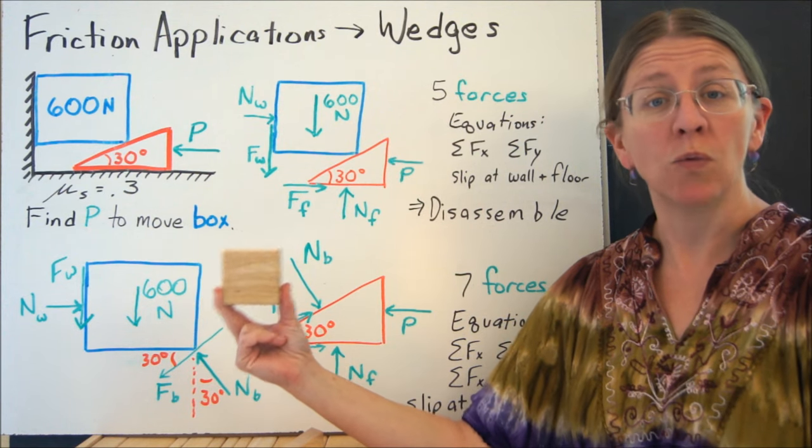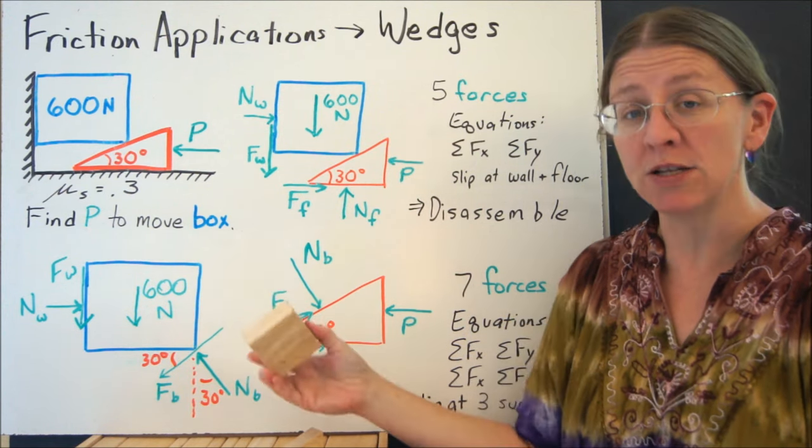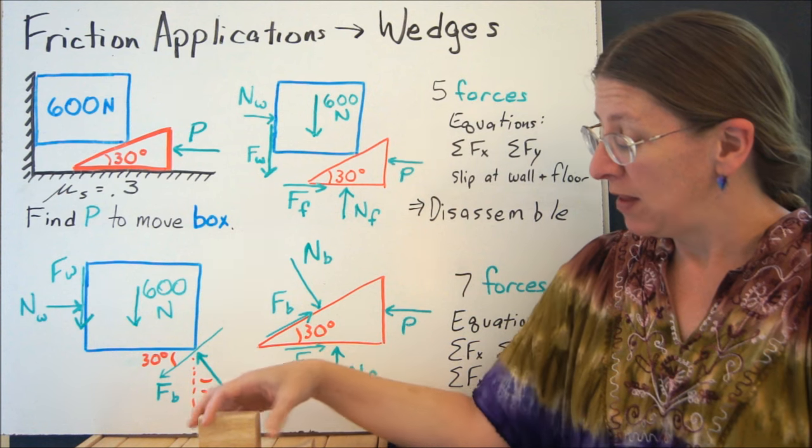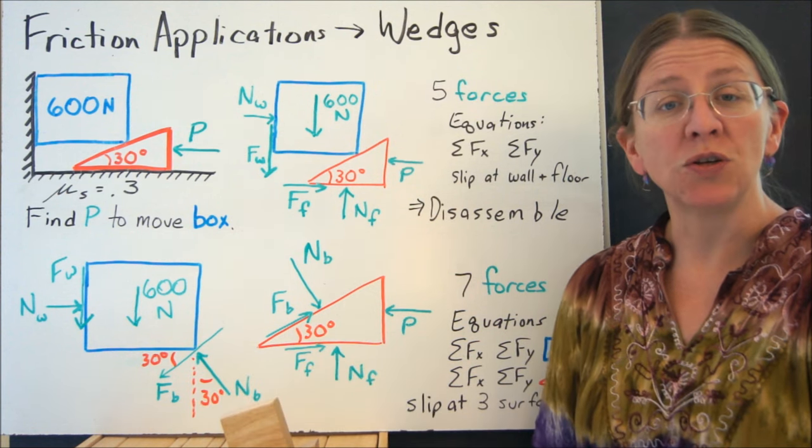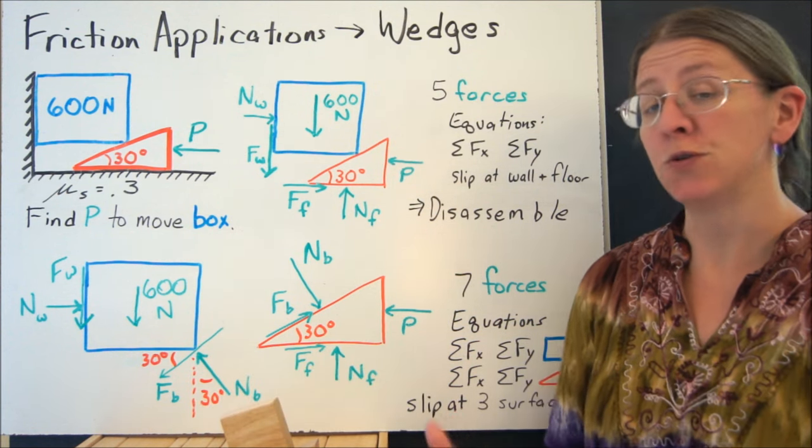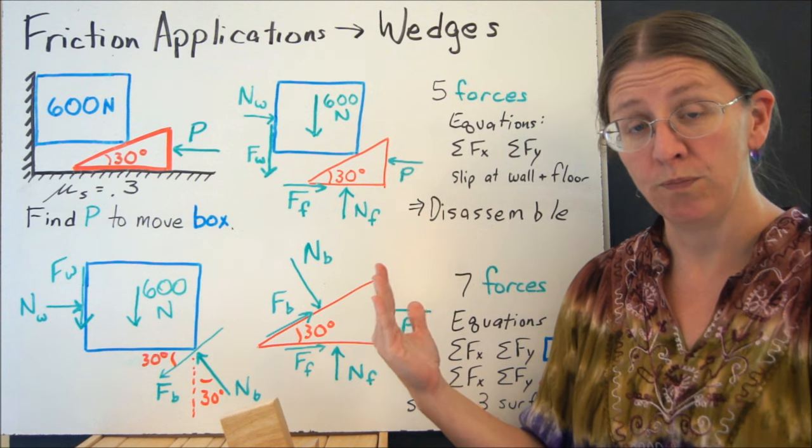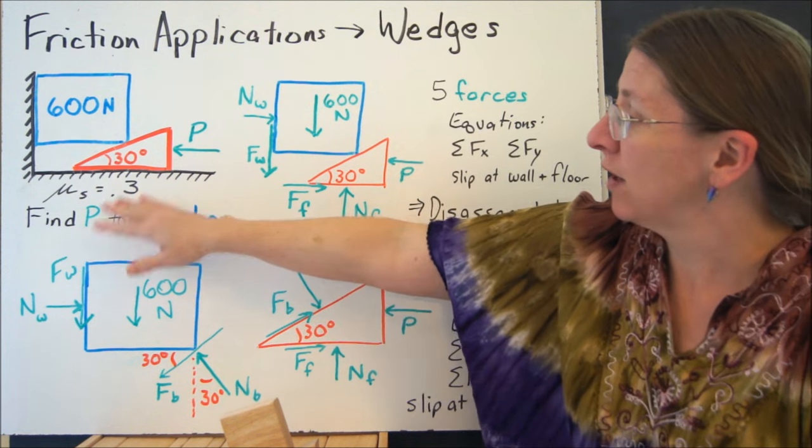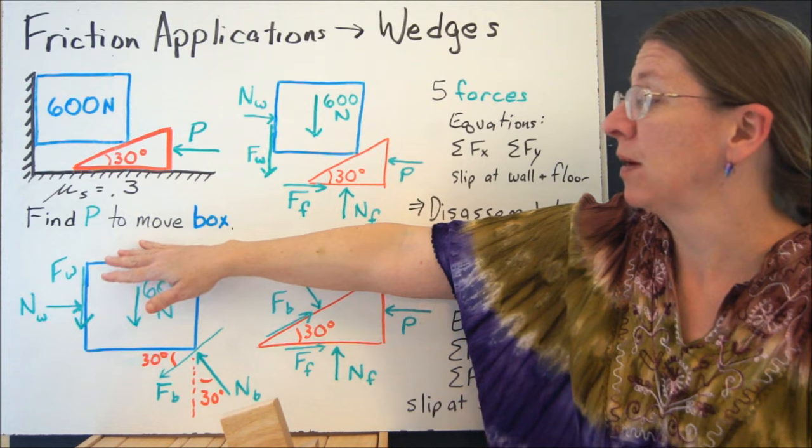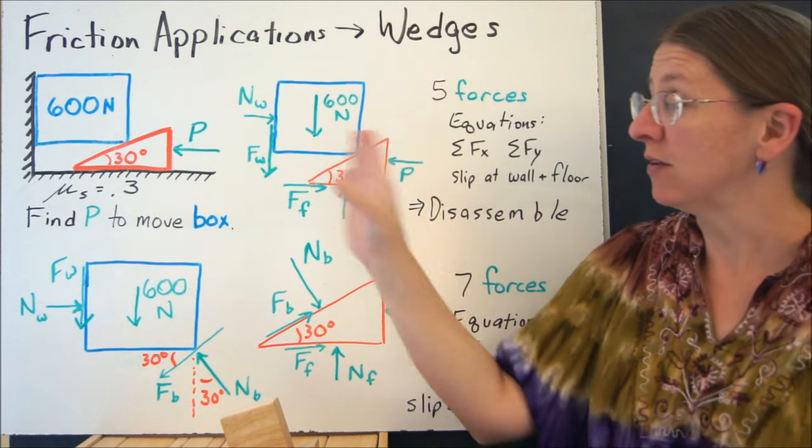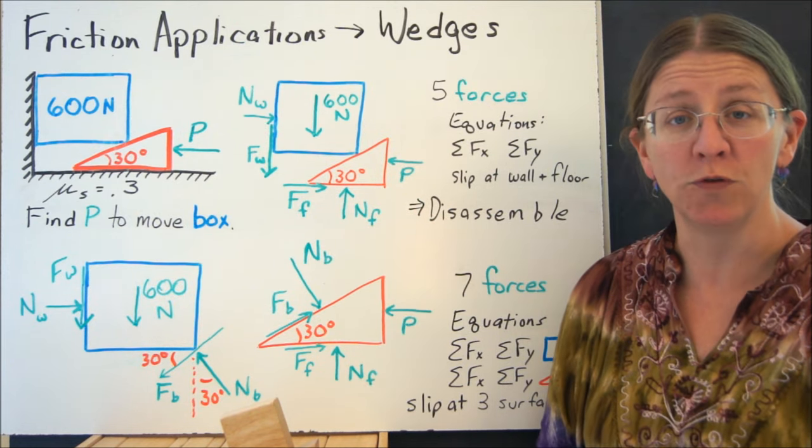If you want to lift a heavy block, one of the best ways to do it is to stick a wedge underneath it. That allows us to use a horizontal force to produce a vertical movement. So if I have μs is 0.3, how hard do I have to push in this particular instance to move that block?